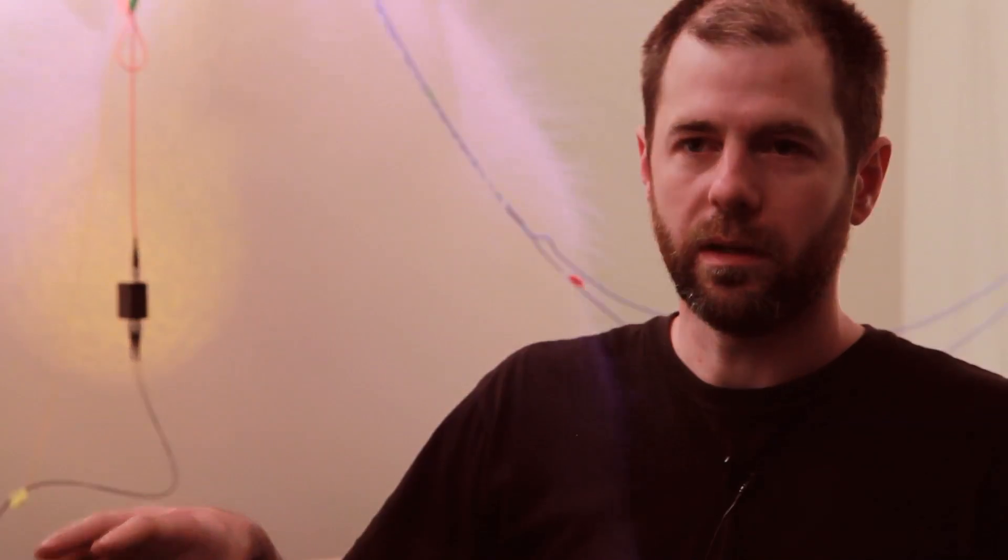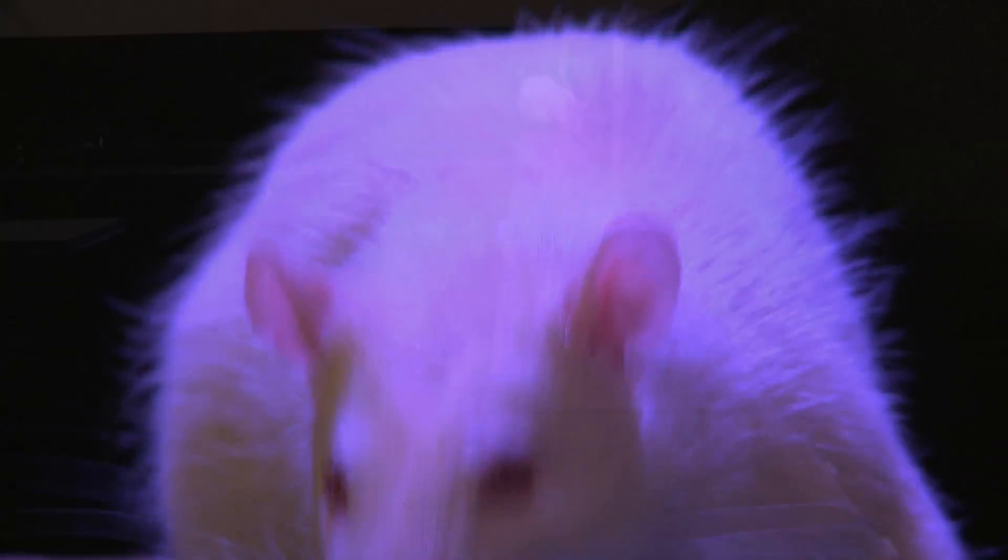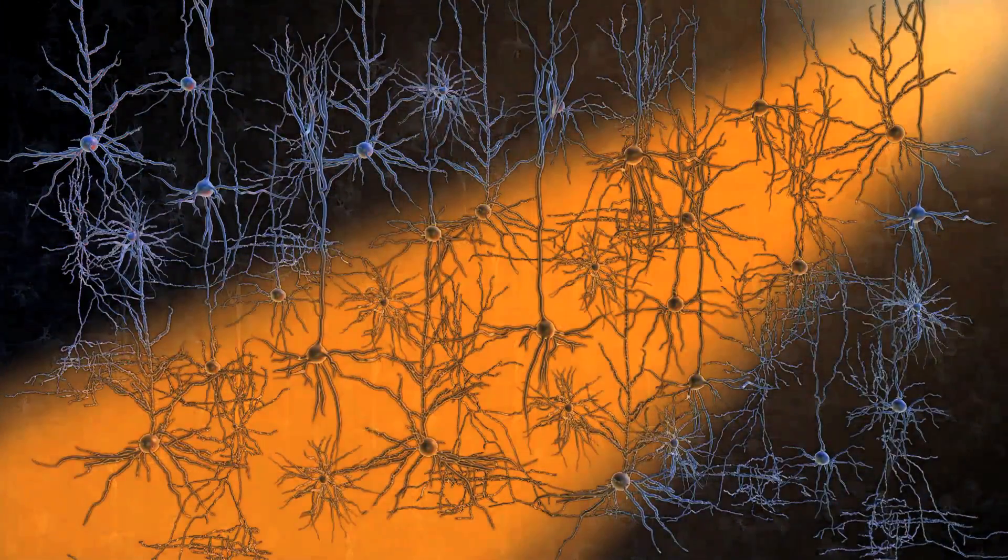We had previously done an experiment where we were able to use a maze task to get rats running habitually, and we had some measures of that. We were able to go in with halorhodopsin, which is an optogenetic tool allowing us to inhibit cells.